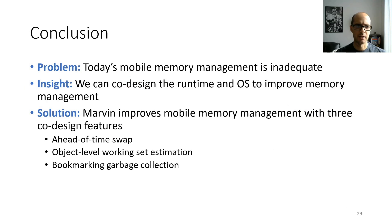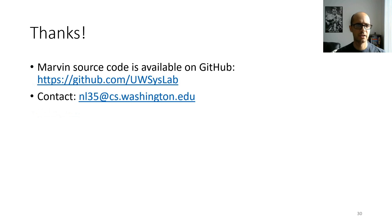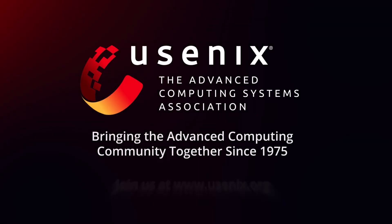In conclusion, we set out to address the problem that mobile memory management today doesn't work very well. Our insight is that we can co-design the runtime and the operating system to improve mobile memory management. We built Marvin, a new memory manager for Android, which improves memory management with three co-design features: ahead-of-time swap, object-level working set estimation, and bookmarking garbage collection. Our source code for Marvin is available on GitHub, and my email is nl35@cs.washington.edu if you have any questions. Thanks for watching.